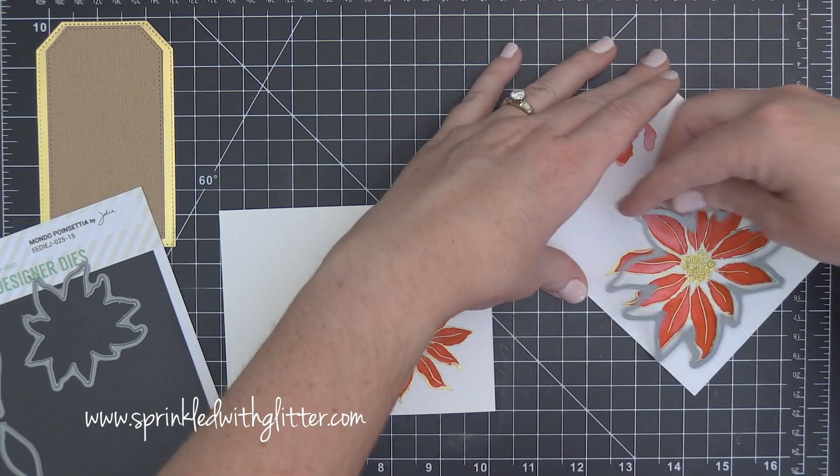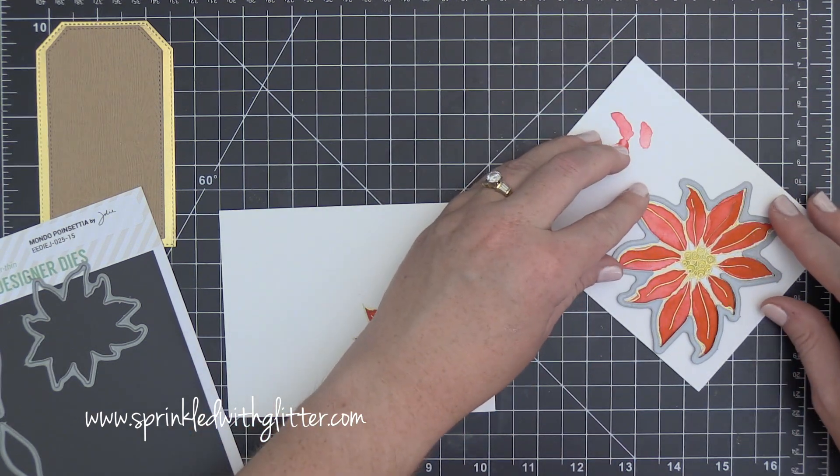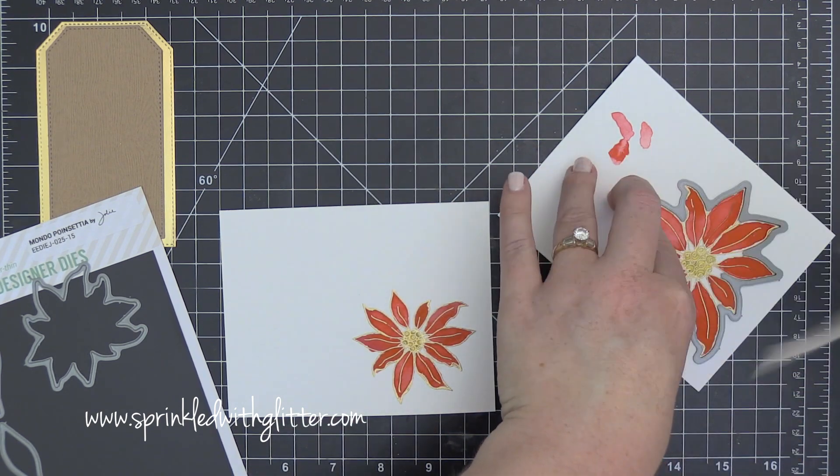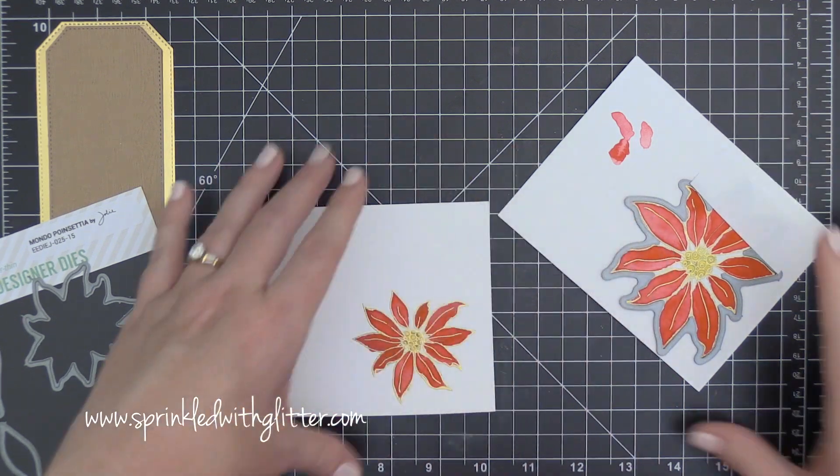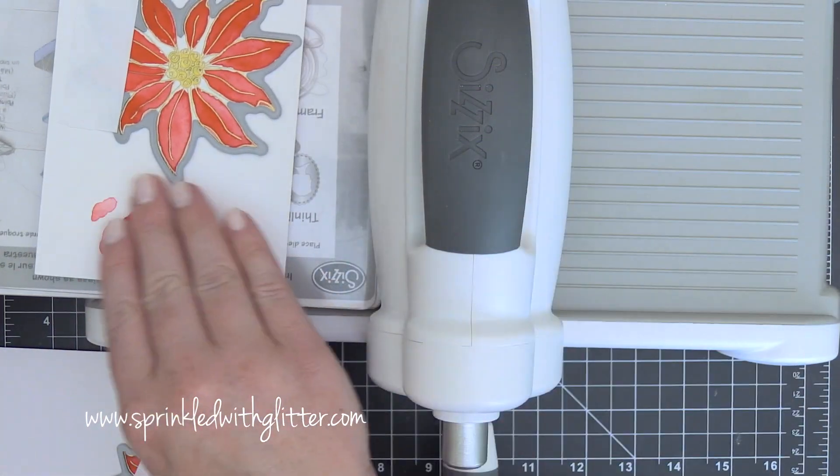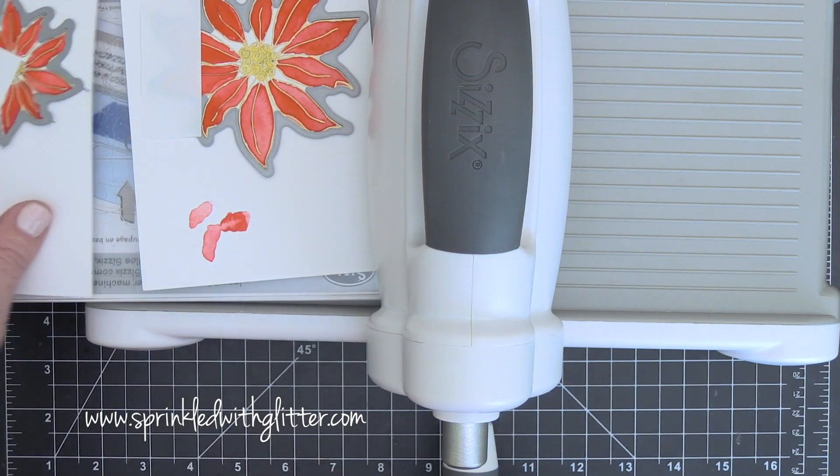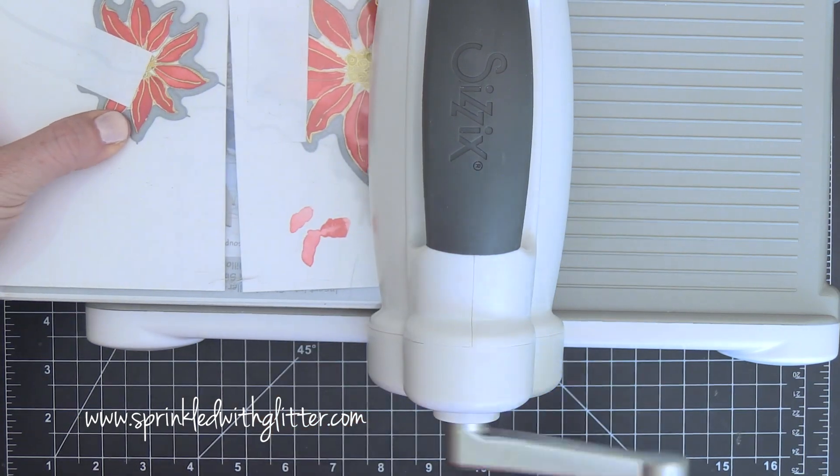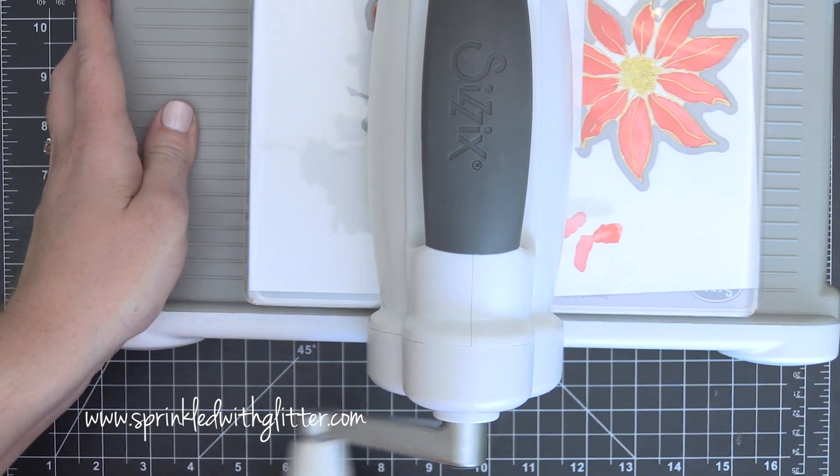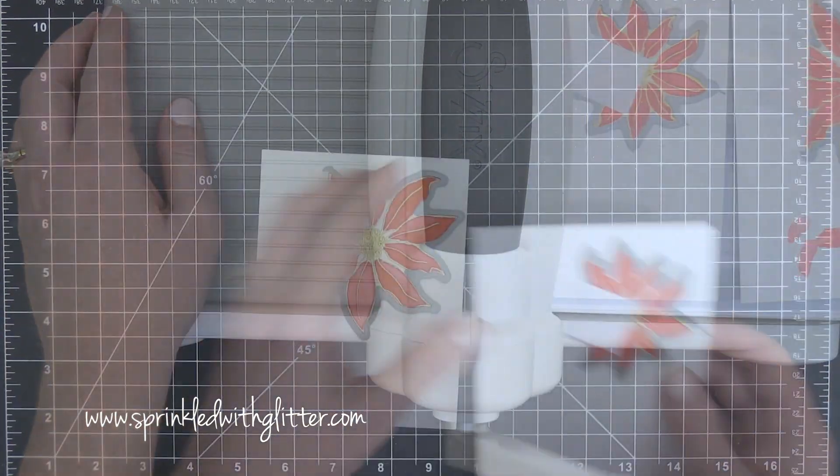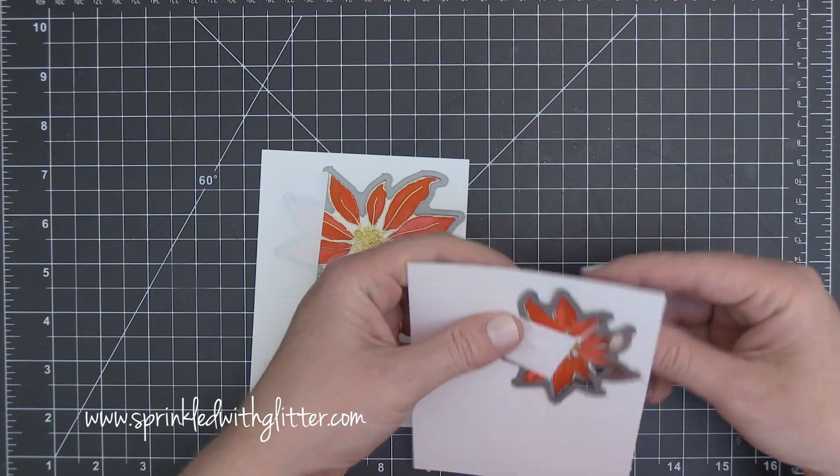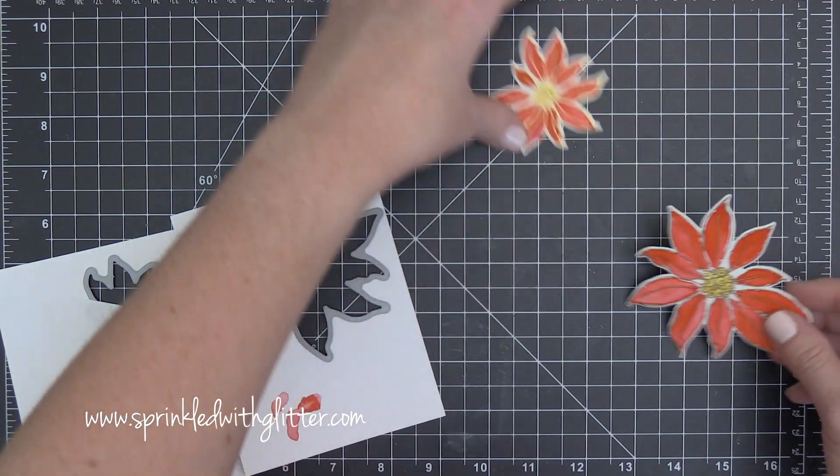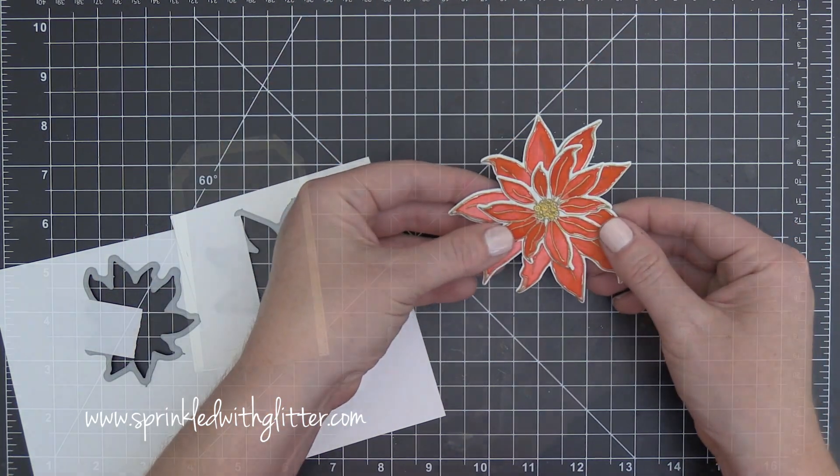So now I have the coordinating dies, the Mondo poinsettia dies, and you can see here I am apparently really puzzle challenged because I can't ever get these flower dies onto the coordinating stamp right in the first try. I have to always move them around but when I finally do get them positioned in the right position I added a little bit of post-it tape to keep them in place. Then I'm going to run them through my Sizzix Big Shot machine and you can see that when I pop these out here I have these really beautiful clean cut edges, I've got some beautiful watercolor and this is going to make a great statement piece on my tag.